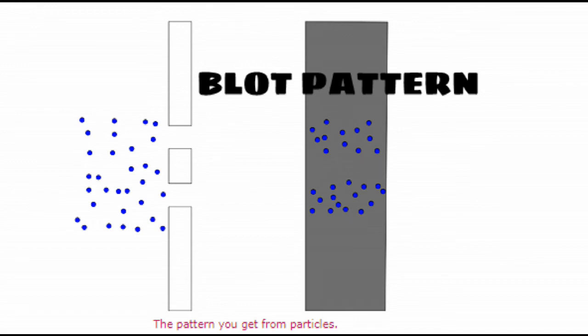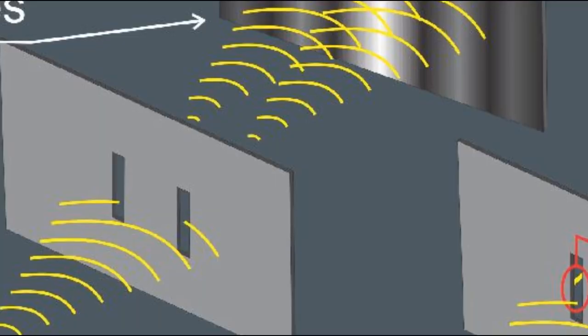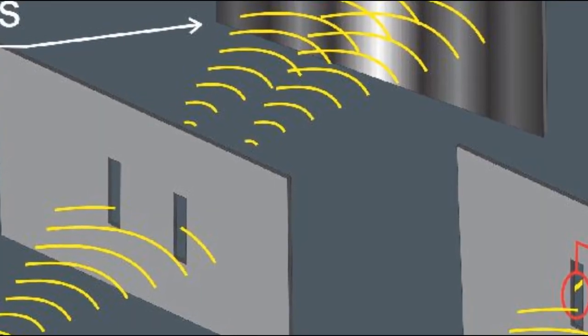But if we partially submerge the screen and the wall and direct a wave toward the screen, the pattern on the wall behind the screen would look much different. When the wave hits the screen, most of it would be blocked by the screen, but some of the waves would pass through the left slit and the right slit.